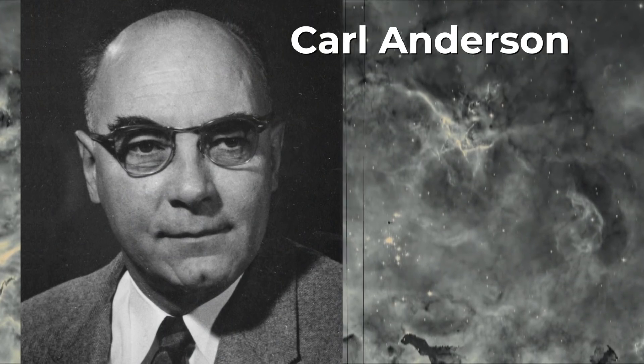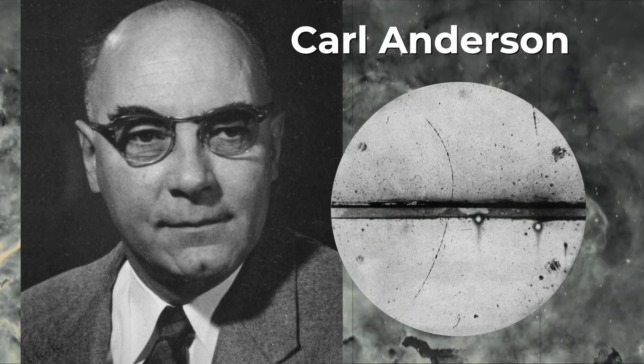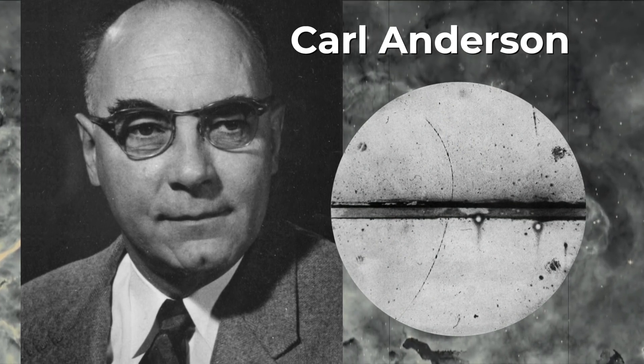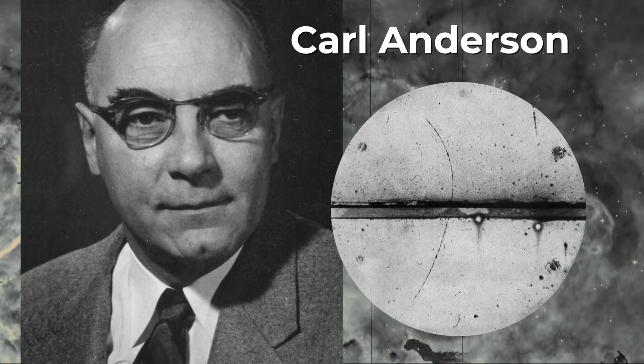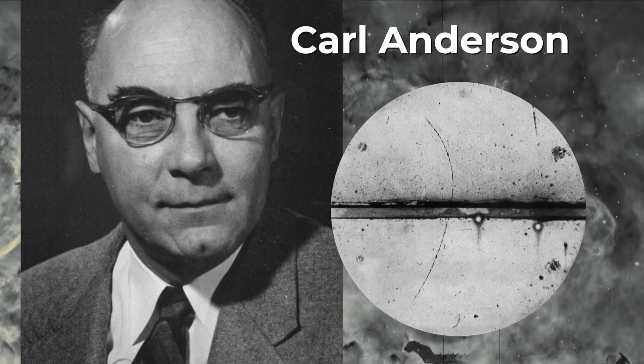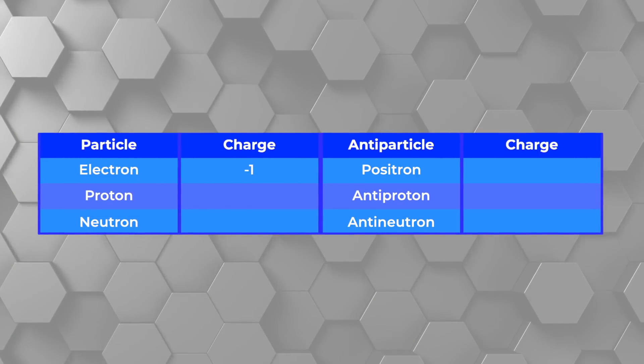It was only a few years later that a young professor at Caltech by the name of Carl Anderson discovered the antimatter electron. The antimatter electron is called the positron. It has identical properties to the electron – mass, spin, size, you name it – except for electrical charge. The electron has the charge of negative one, and the positron has the charge of positive one.